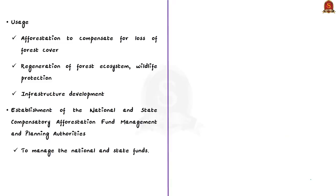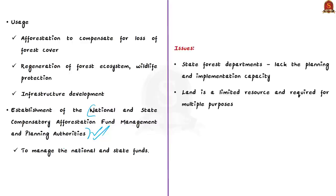In addition to establishing the national and state funds, the CAF Act also established two important authorities: the National Compensatory Afforestation Fund Management and Planning Authority and State Compensatory Afforestation Fund Management and Planning Authority. Initially there were issues in utilizing funds because there was no authority to manage them. Among other factors affecting compensatory afforestation and forest conservation, the first is the lack of capacity in state forest departments — these departments lack planning and implementation capacity for compensatory afforestation. Since 90% of funds are transferred to states, effective utilization depends entirely on state forest department capacity.